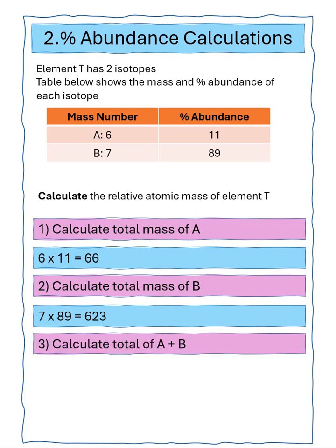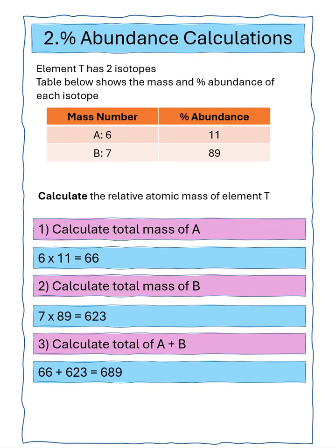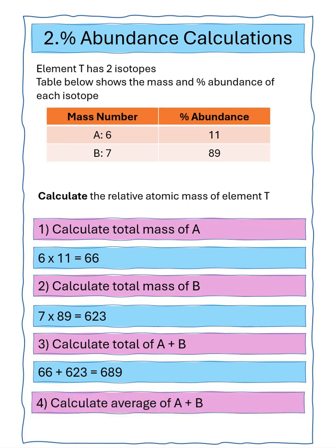We then simply calculate the total of A and B, which is 689. Because the percentage is 100, we calculate an average by dividing by 100. That gives us an average atomic mass for element T of 6.89.